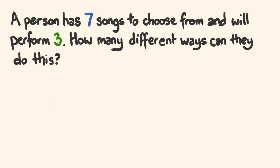Question one: a person has seven songs to choose from and will perform three. How many different ways can they do this? For any of these questions, the very first thing to do is identify it as a combinations question or a permutations question. With combinations, order doesn't matter — selecting things from a bigger group without caring what order they come out in. But with permutations, order does matter. This is a permutations question — there is a very definite first song, a very definite second song, and a very definite third song.